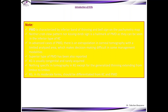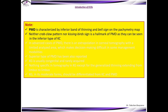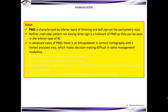A few key points: PMD is characterized by inferior band of thinning and bell sign on the pachymetry map. Neither the crab-claw pattern nor the kissing-bird sign is a hallmark of PMD, as they can also be seen in the inferior type of keratoconus. In advanced cases of PMD, there is extrapolation in corneal tomography with a limited analyzed area, which makes decision-making difficult. Superior type of PMD has also been reported.